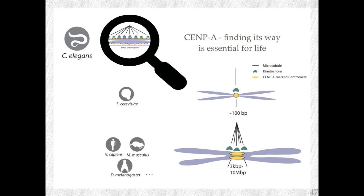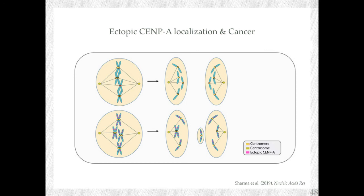To give a more tangible example of why this matters: when Sempe does not find its right location, this can actually support things like tumorigenesis — cancer. In many human cancers, you find Sempe actually being in the wrong places. What we think is happening is that it dilutes away the kinetochore and centromere components from the native centromeres and leads to genomic instability that supports tumorigenesis and also leads to a very poor prognosis outcome. So this question is even relevant in the context of cancer.